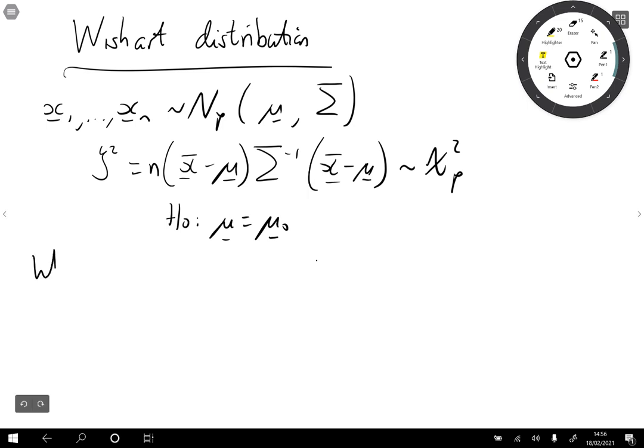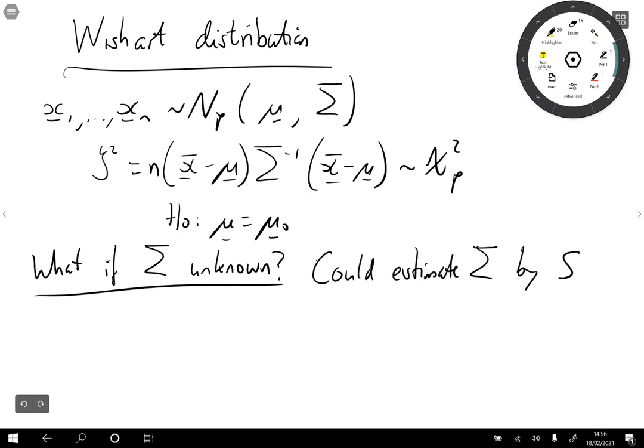But what happens if sigma is unknown? Well, we could estimate it by using the sample covariance matrix S. So instead of using the zeta here, we could use something like x bar minus mu S inverse x bar minus mu.